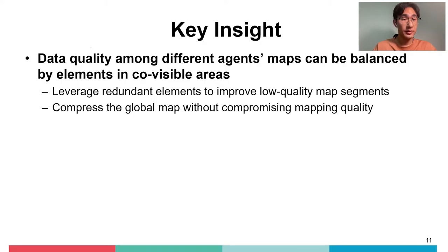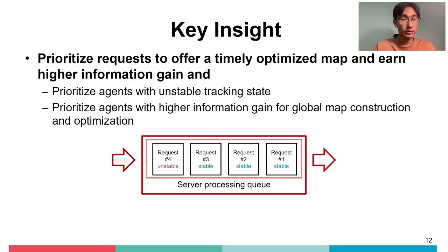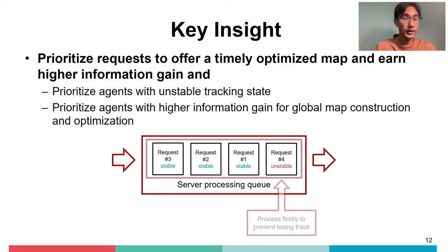To address the global map redundancy issue, we find that data quality among different agents' maps can be balanced by elements in co-visible areas. We leverage redundant elements in co-visible areas to enhance low-quality map segments. With a more balanced map, we can remove large portions of redundant map data without sacrificing map accuracy. To solve the problem brought by conventional scheduling strategies, we give each request a priority. Requests from agents with unstable tracking state or with higher information gain are processed earlier, decreasing tracking loss rate and improving overall map quality.